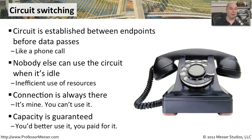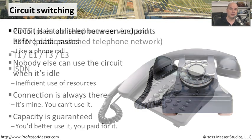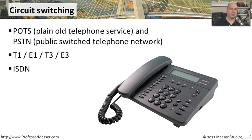But because you're using this and it's dedicated for you, there's usually a premium associated with that. You're going to be paying for that connection whether you use it or not. Common types of circuit switch networks are things like your plain old telephone service or your public switched telephone network. You also have T1s, E1s, T3s, and E3s, where you're bringing up a circuit and it's always going to be there.